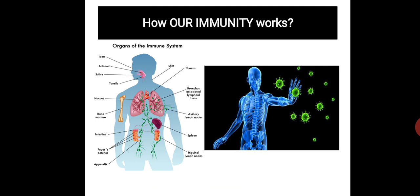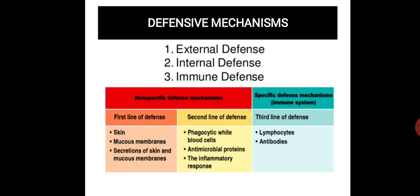Here is how our immunity works. The main immunity organs and tissues include the thymus gland, spleen, and bone marrow, which suppress microorganisms and protect the body from infectious diseases. There are three types of defense mechanisms: external, internal, and immune. The first line of defense is skin, mucous membranes, and their secretions. The second line is phagocytic white blood cells, antimicrobial proteins, and inflammatory responses. The third line includes lymphocytes — T cells and B cells — which detect viruses and produce antibodies.